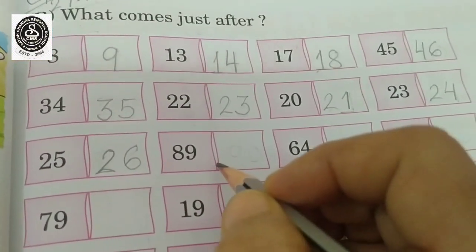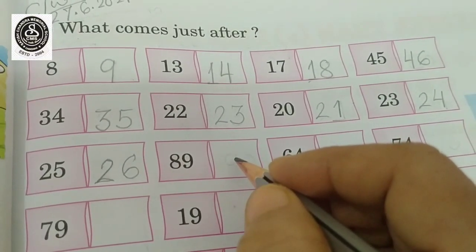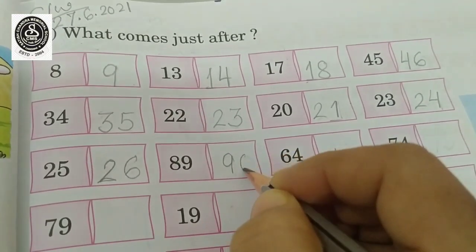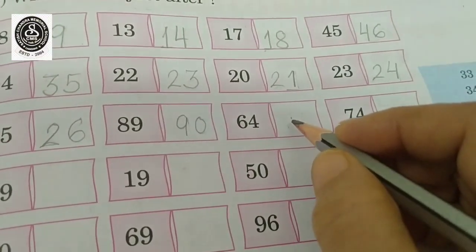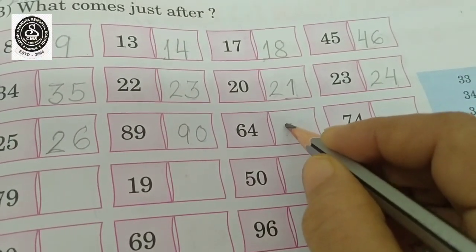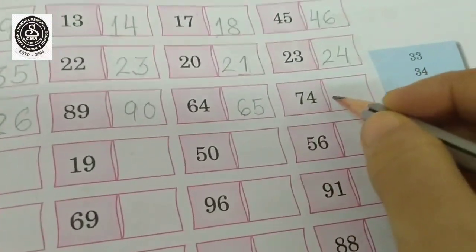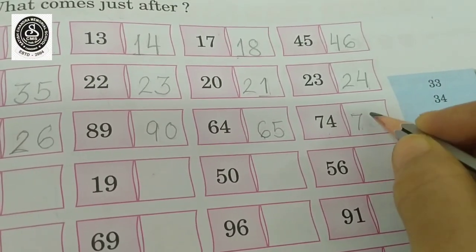And after 89? What comes? 90, 90. And what comes after 64? 65. You are right. And what comes after 74? Yes, 75.